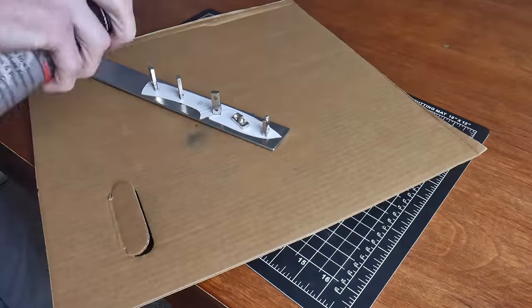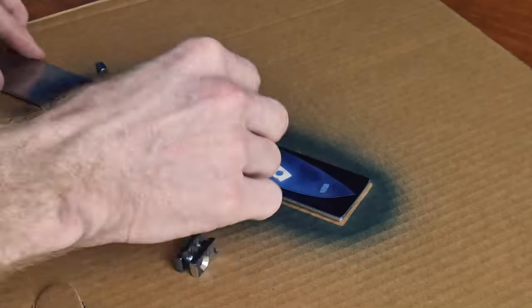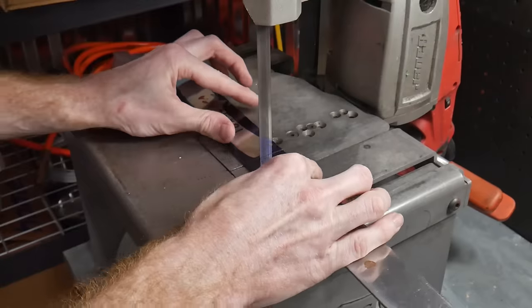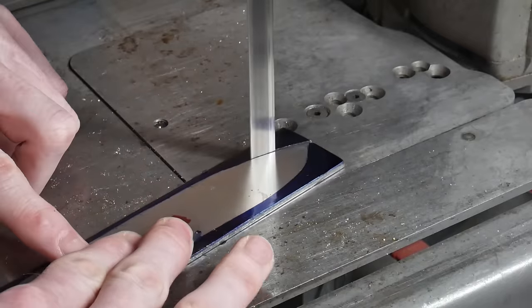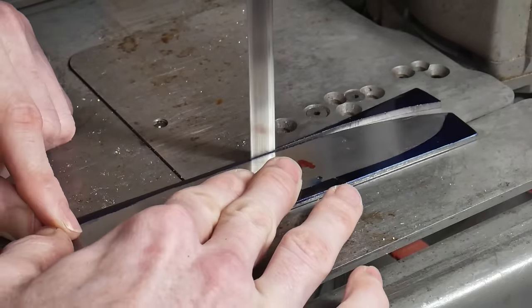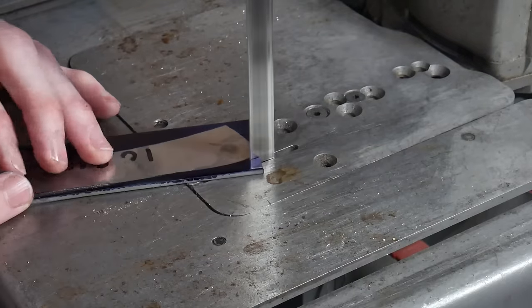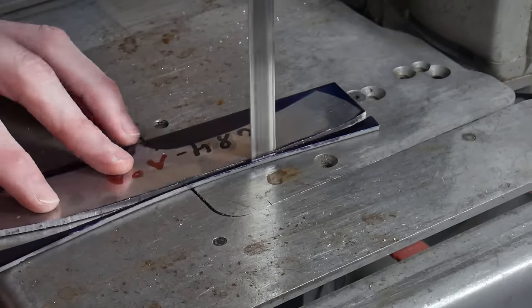With the knife we're making in this video, the plan is to go back to the basics with a 1084 mono steel full tang blade that has a little bit of a tactical flare. The bar stock I'm using is an eighth of an inch thick and one and a half inches wide.